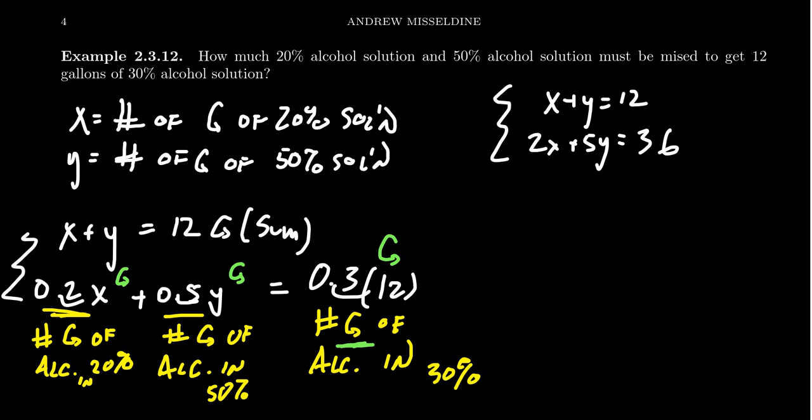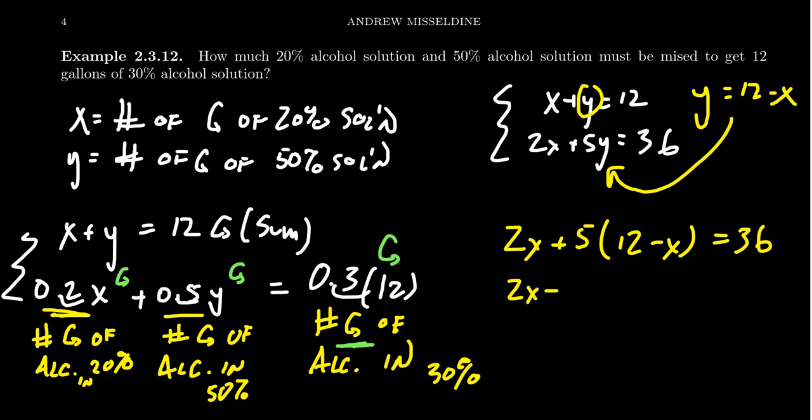We can do this by substitution or elimination, whichever you prefer. I'm going to do substitution where you solve for y in the first equation. You get y equals 12 minus x. Substitute this into the second equation below. So we get 2x plus 5 times (12 minus x) equals 36. Distributing the 5, we get 2x plus 60 minus 5x equals 36. The 2x combines with the negative 5x to give us negative 3x.